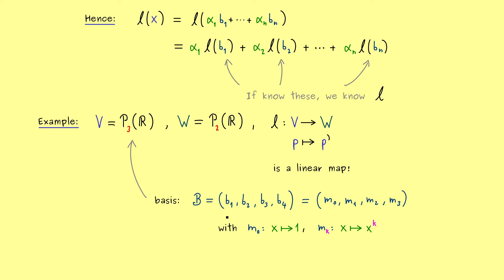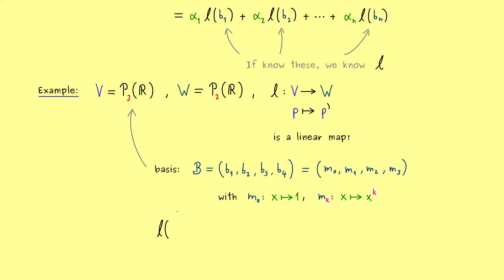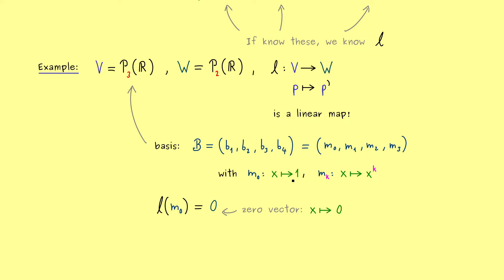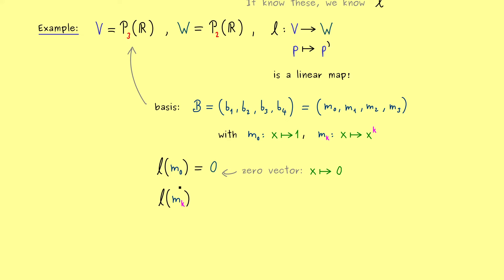And now as a reminder, m0 just represents the constant function. So it just sends x to 1. And all the other monomials here can be easily described with an index k, because there we can say we send x to x to the power k. However, it's still good to distinguish these cases when we want to apply the derivative. Simply because the derivative of the constant function is the zero vector.